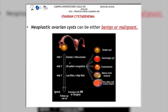When we talk about neoplastic ovarian cysts, we can think about two options: they can be benign or malignant, and of course the prognosis differs accordingly. When we talk about these cystadenomas or tumors in the ovary, we can consider a simple cyst, hemorrhagic cyst, endometrioma, mature cystic teratoma, or any other cyst that could possibly be malignant. The key difference is defining whether it is benign or malignant.